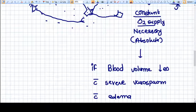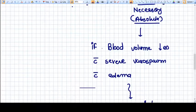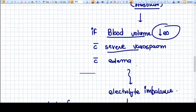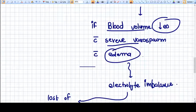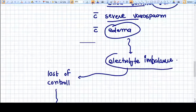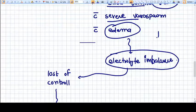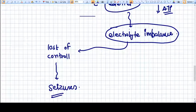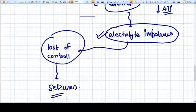In case of PIH, we know that the blood volume decreases. There is severe vasospasm and edema due to capillary leak. All this causes electrolyte imbalance due to reduced amounts of ATP available, due to reduced amounts of oxygen and fuel. Because of this electrolyte imbalance, there will be loss of control.